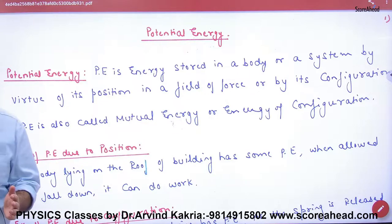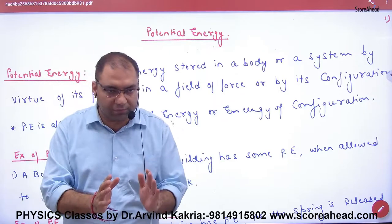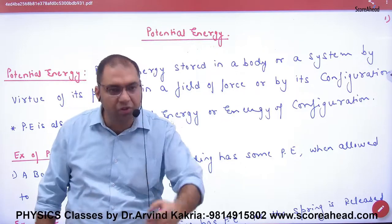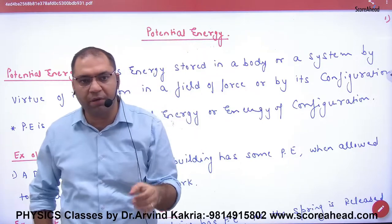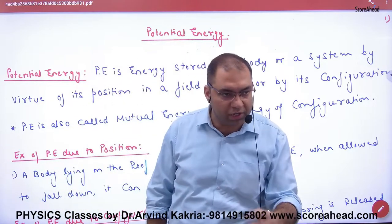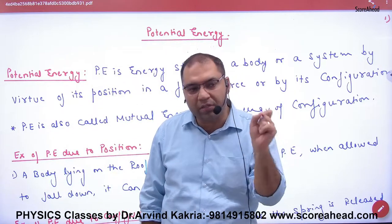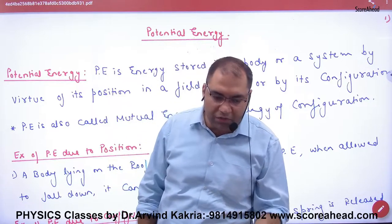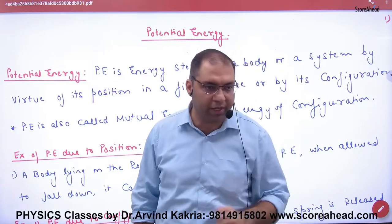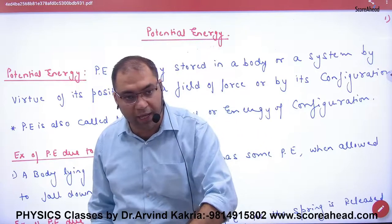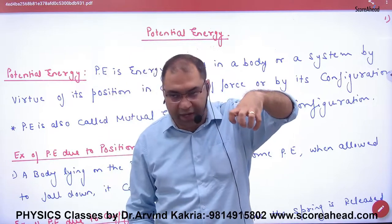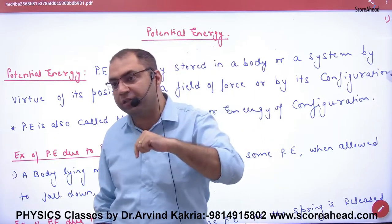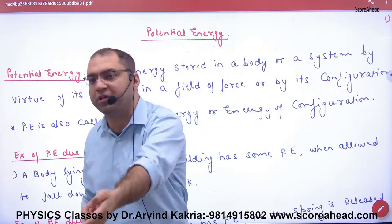Now let's move on. Potential energy are two types. The first type is gravitational potential energy. When I talk about gravitational potential energy, this means that gravity's force is acting on the stone or object. I do the work done against that force, I take that object up, and the amount of work done - that means my potential energy.